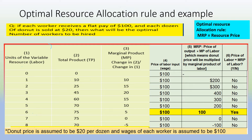So in this case, if this is a donut company and the donut is sold at $20 a dozen, then if the first worker's marginal product is 10 dozens of donuts, then the marginal revenue product (MRP) for the first worker will be 10 times $20, which is $200. That is why on column five, the MRP for the first worker is $200.